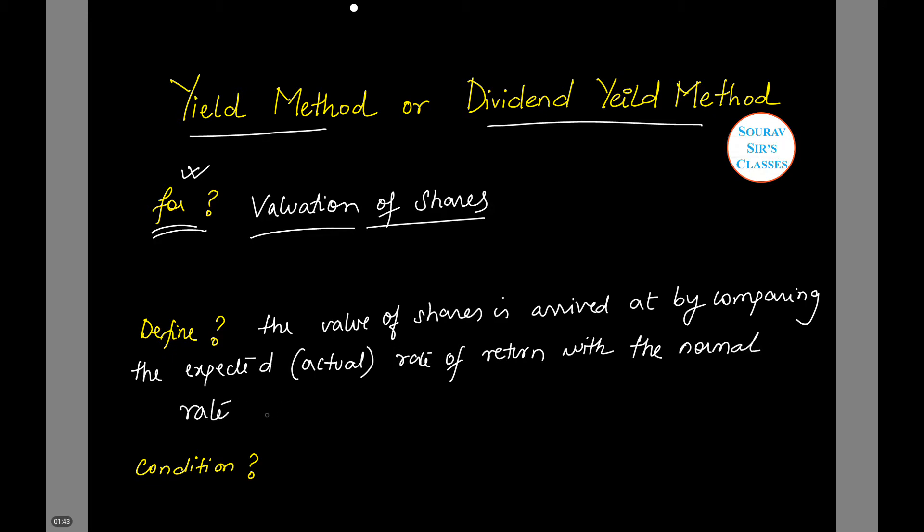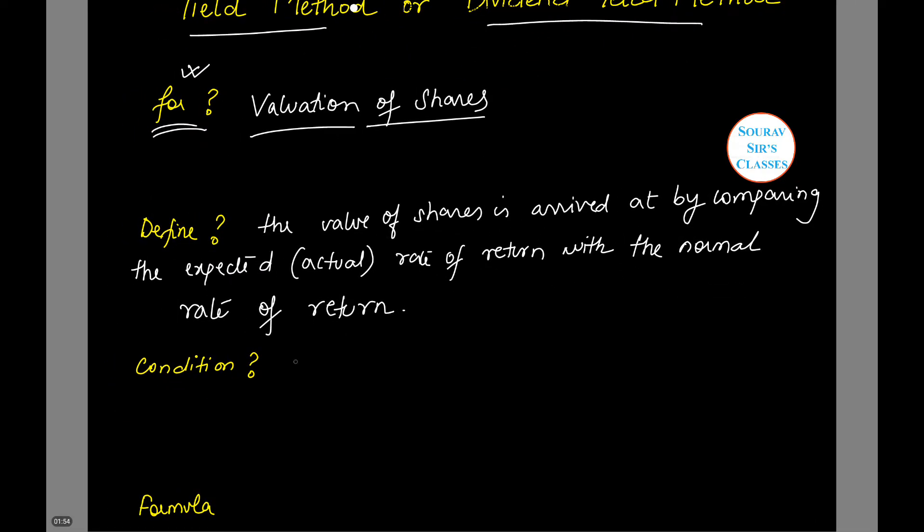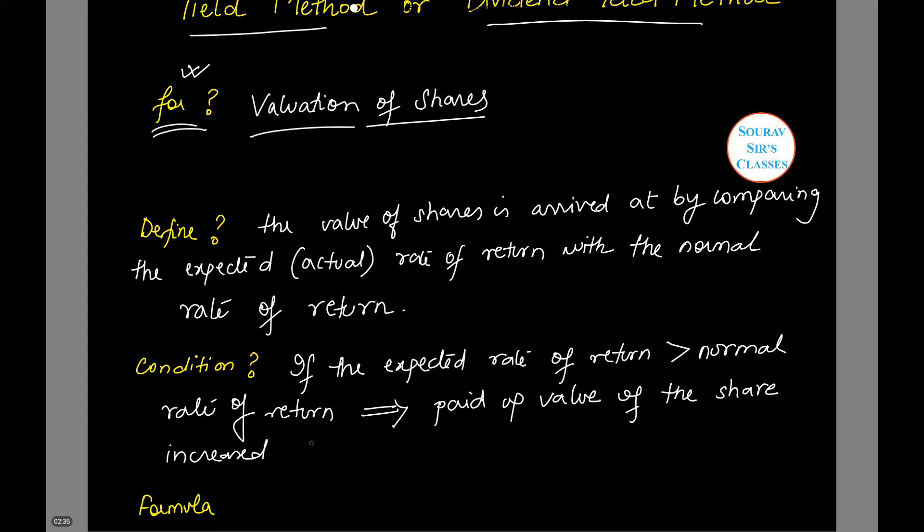So here, it is basically a comparison between the two: the normal and the expected rate of return. If the expected rate of return is more than the normal rate of return, then this implies that the paid-up value of the shares will increase proportionately.